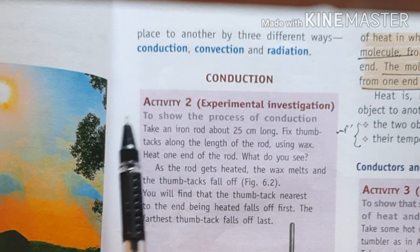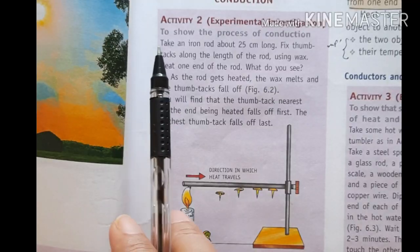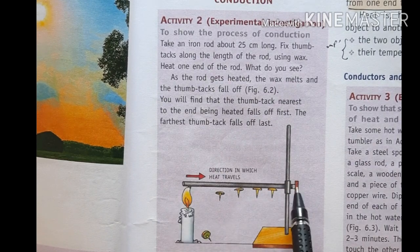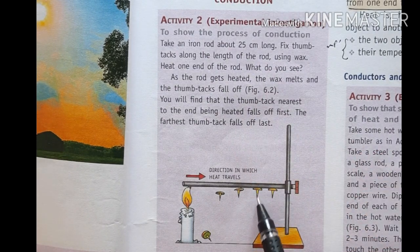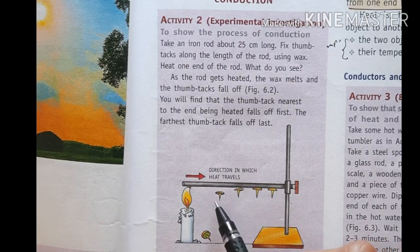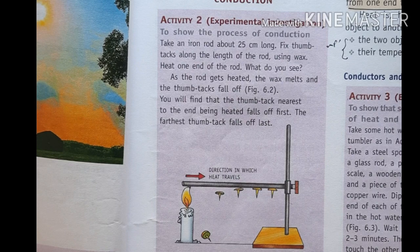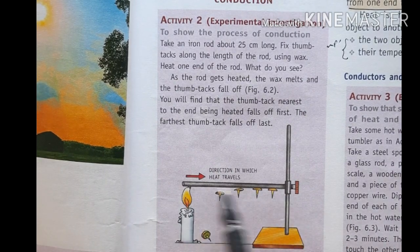There is one activity given to show the process of conduction. Take an iron rod about 25 cm long. Fix thumbtacks along the length of the rod using wax — melt some wax, stick a nail on it, and attach it to the rod. You can use a candle to melt the wax and stick the thumbtacks along the rod.